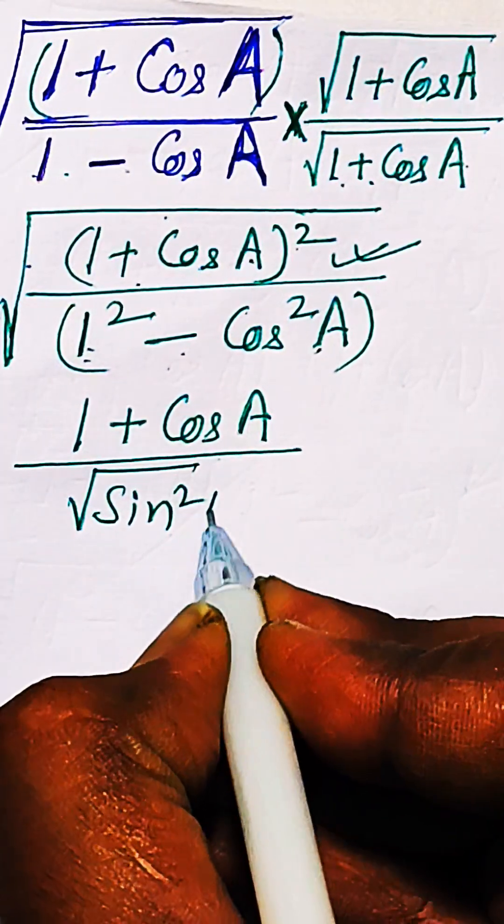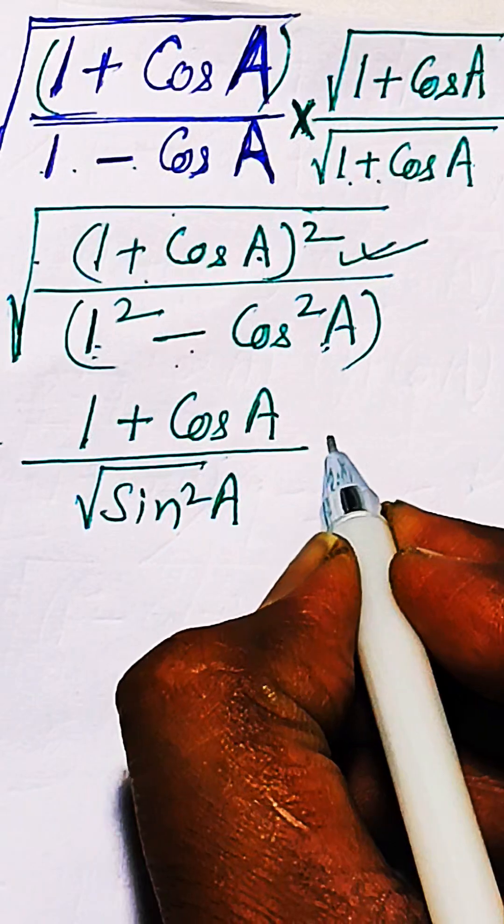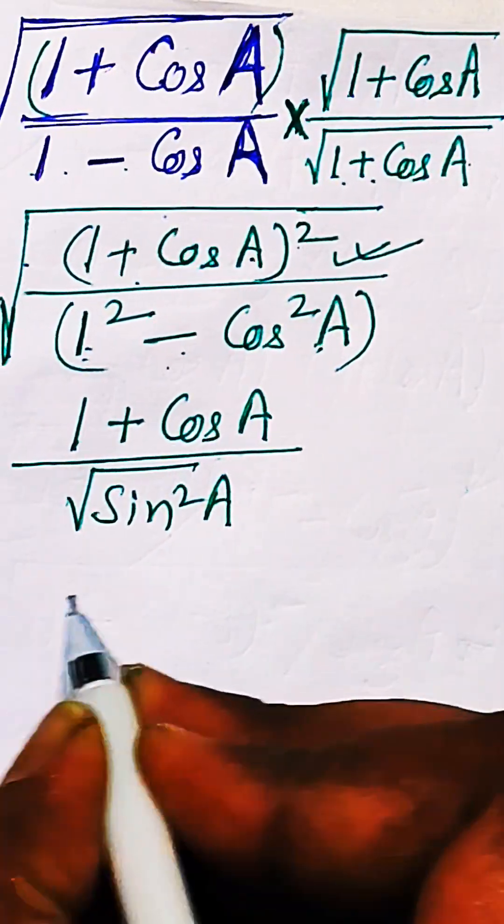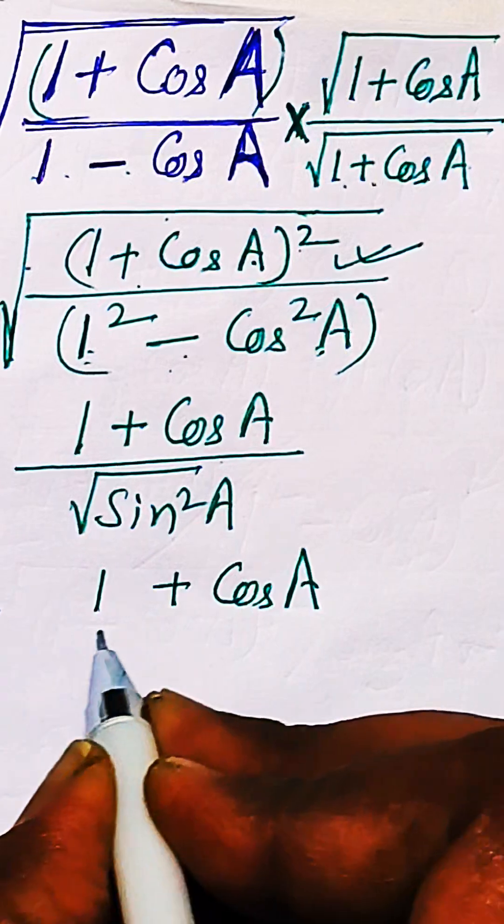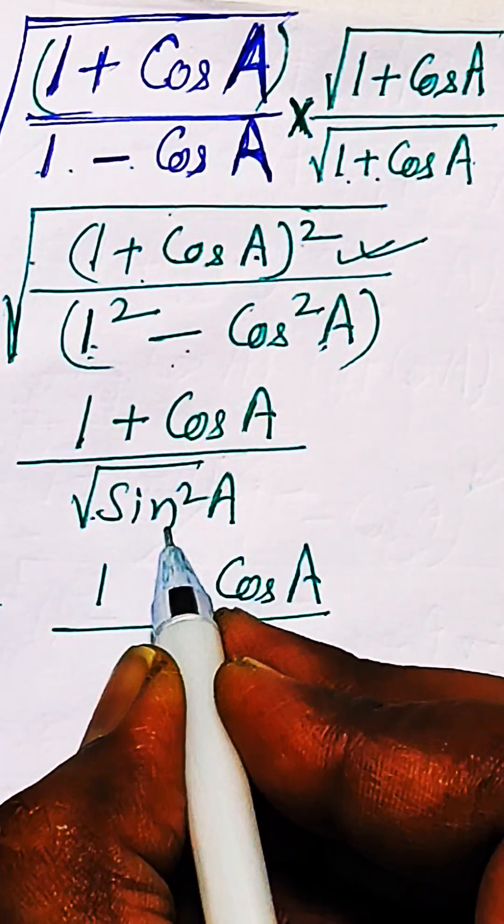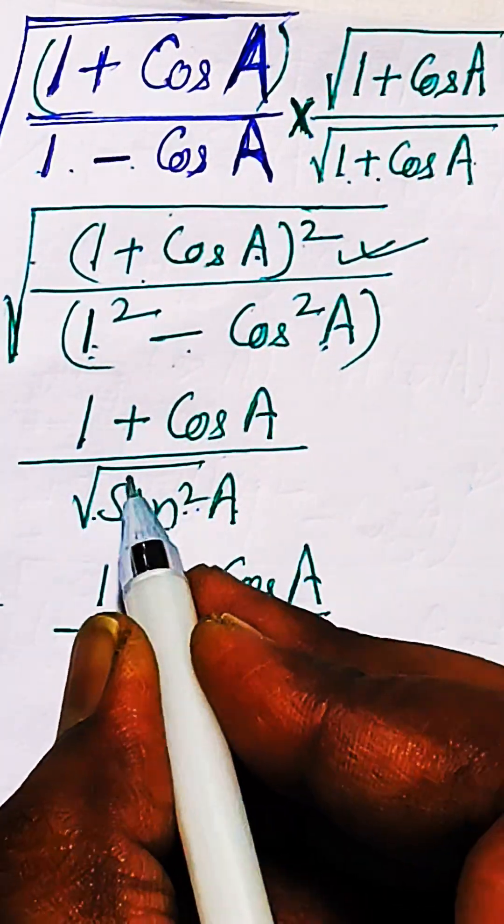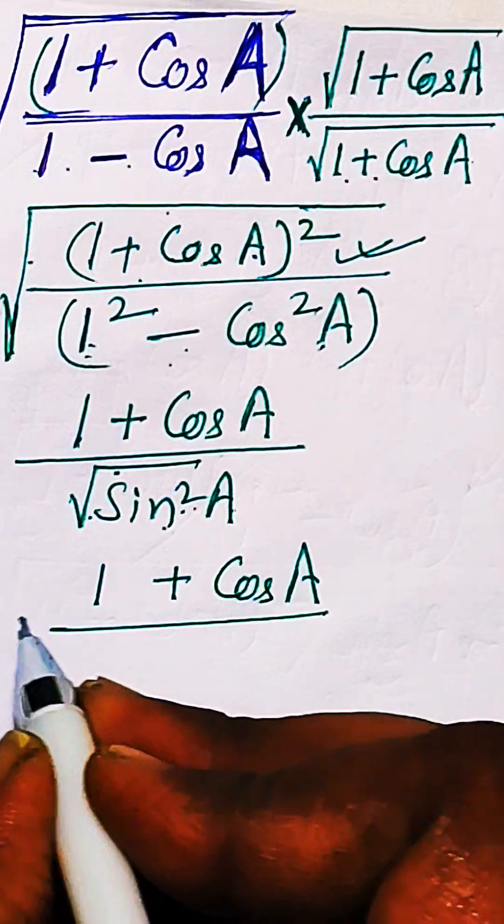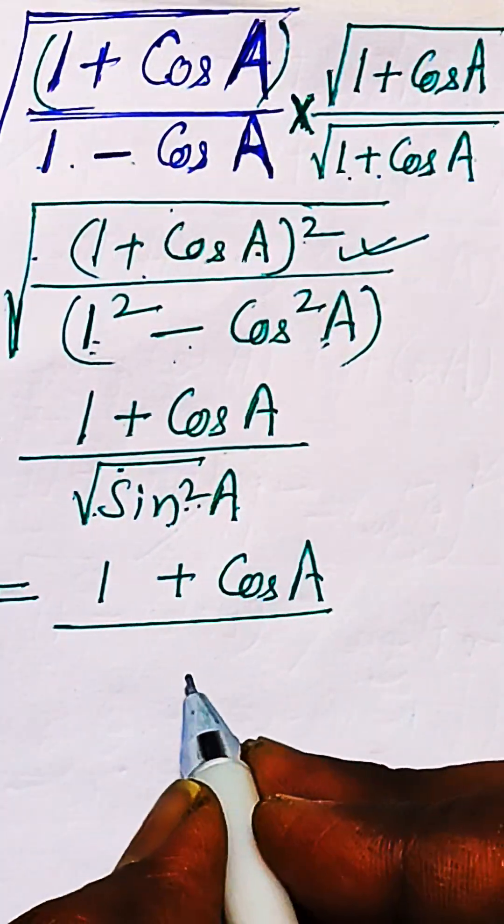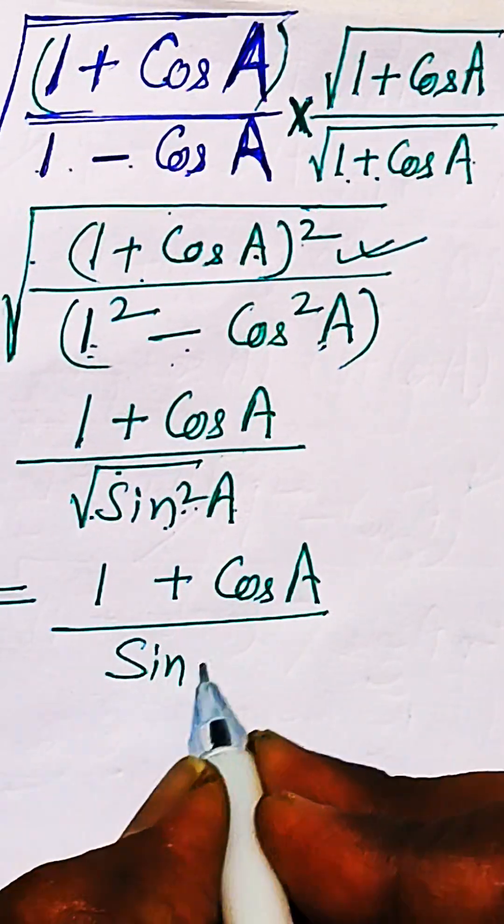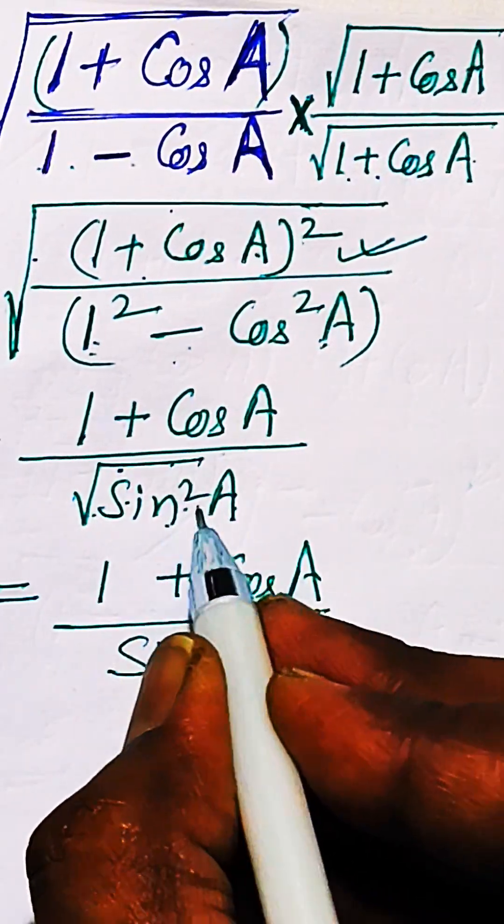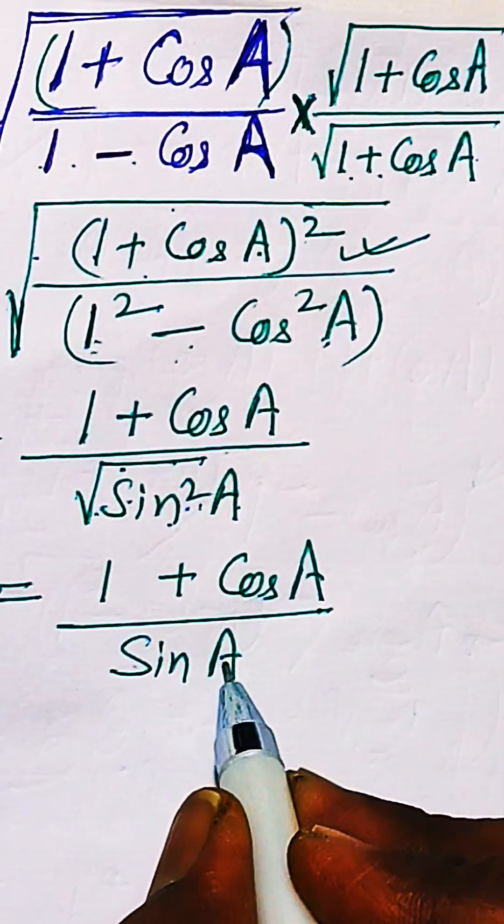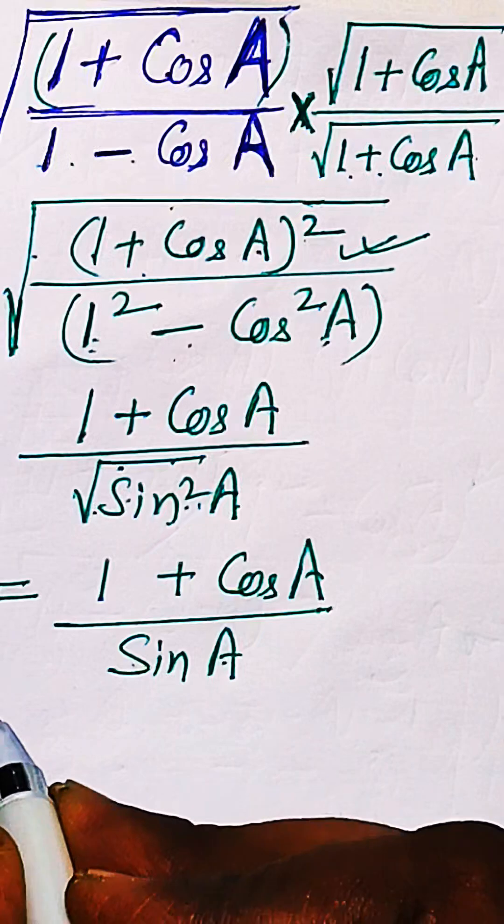This can be further written as (1 + cos A) divided by √(sin² A). When sin² A is inside the square root in the denominator, this can be written as sin A, because sin A squared under the square root gives sin A.